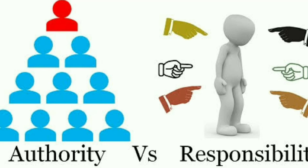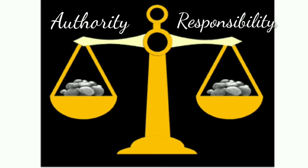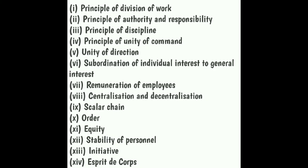The superior is bigger than the subordinate. The superior has authority — the right to give orders to his subordinate. What is expected of the subordinate by virtue of his position is the responsibility. Authority and responsibility both must go hand in hand. Where there is authority, responsibility also needs to be present. This is the meaning of the principle of authority and responsibility: there should be a proper balance between authority and responsibility.